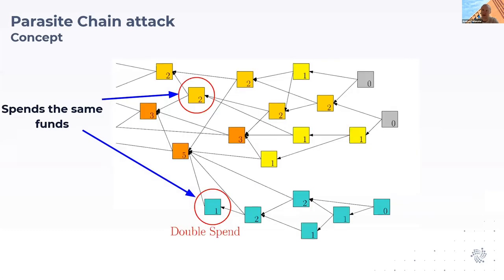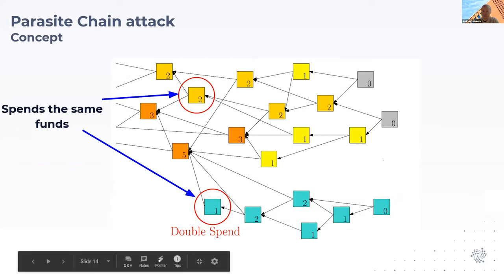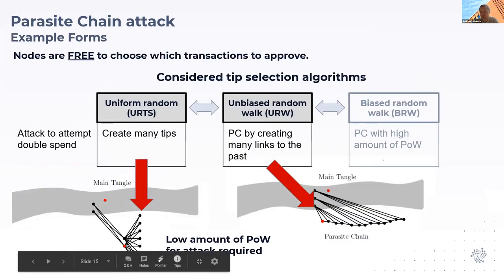In parallel, he mines secretly a chain in parallel that he only reveals once the spend has been accepted. He hopes that this parasite chain Tangle is then overtaking the main Tangle, which would mean all these transactions in the center would be orphaned and his chain becomes the main Tangle.